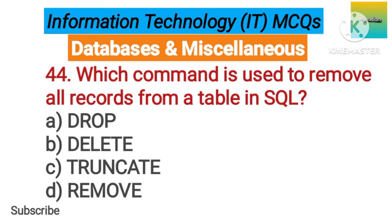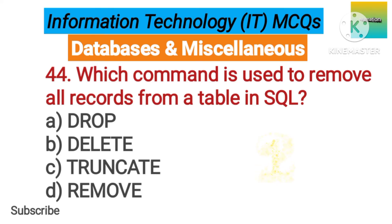Number 44. Which command is used to remove a record from a table in SQL? Option A: Drop. B: Delete. C: Truncate. D: Remove. The correct answer is option C, Truncate.